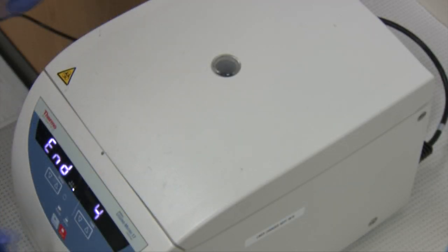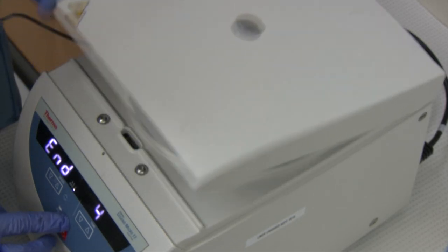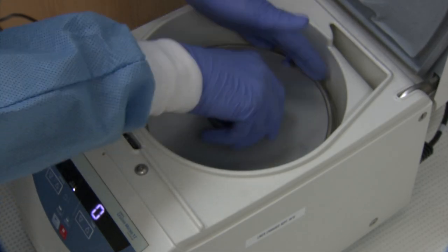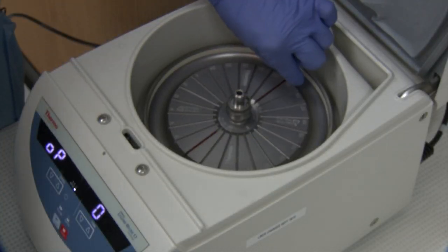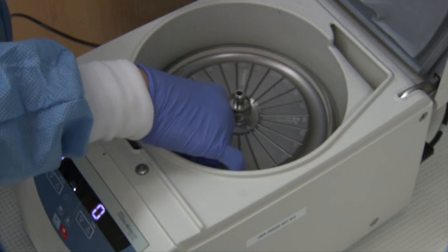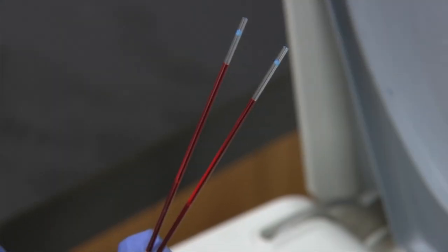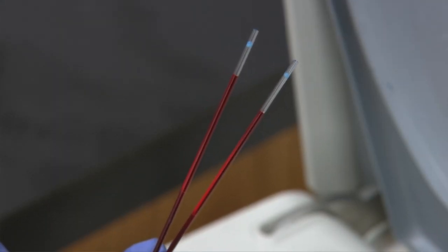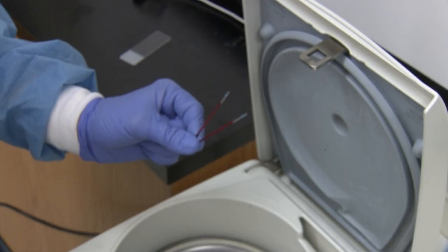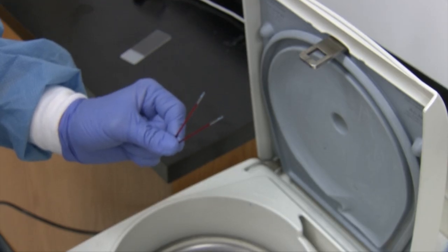Once the time has elapsed, we open the lid, remove the cover plate, and we have our spun samples inside. These ones are obviously quite hemolyzed. You always want to review your plasma color when you take them out of the centrifuge.